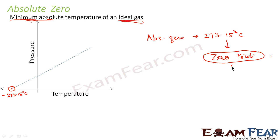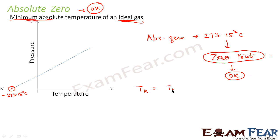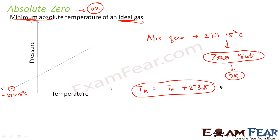In terms of Kelvin, this point is taken as zero Kelvin. So absolute zero is nothing but zero Kelvin, which is equal to −273.15 degrees Celsius. Kelvin is the SI unit of temperature. The relation is: temperature in Kelvin equals temperature in Celsius plus 273.15. This is the relation between the Kelvin scale and the Celsius scale.